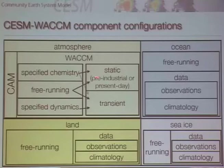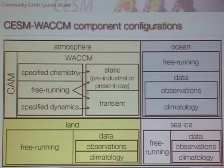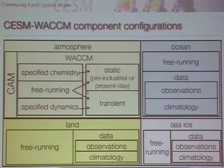In a free-running configuration, you could run either fixed forcing — maybe a pre-industrial 1850 case — or present day, or run into the future with a future condition, or run transient, meaning time-varying forcing. Another useful configuration, especially if you want to look at an event, is a specified dynamics version of the model, where you can nudge the lower part of the model with reanalysis data. For example, if I want to look at the 2007 stratospheric warming, I can force the model with that stratosphere change and see how the mesosphere and above is affected. Specified dynamics are always done in transient mode.